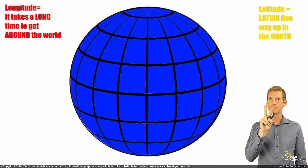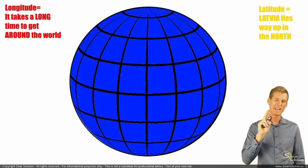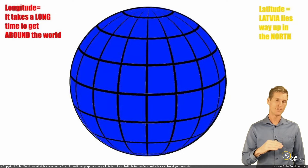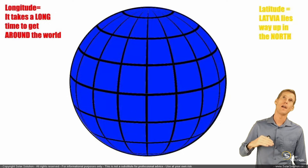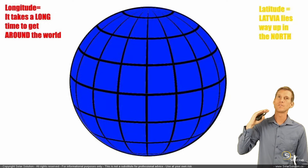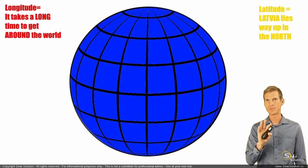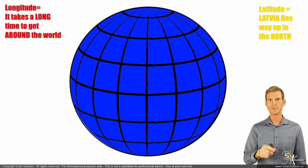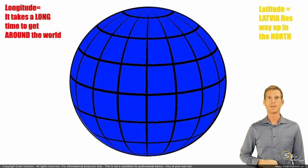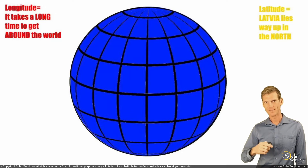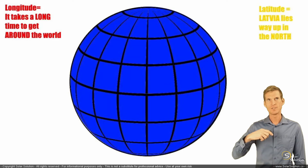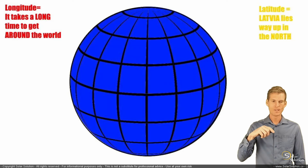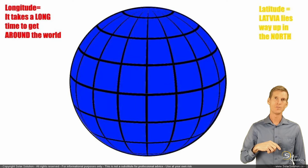With these two values, you can always tell somebody exactly where you are. Of course, you also have the value of elevation — how high up in the mountains are you — but for now that's not the most important value. It's just the longitude and the latitude. Now that you understand this, let's proceed. The latitude, by means of how far north-south you are.